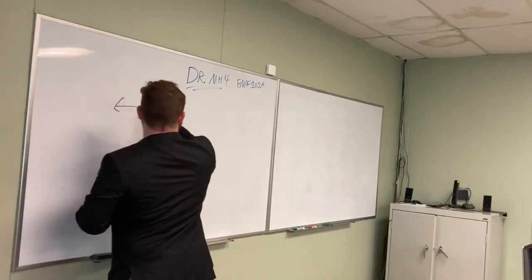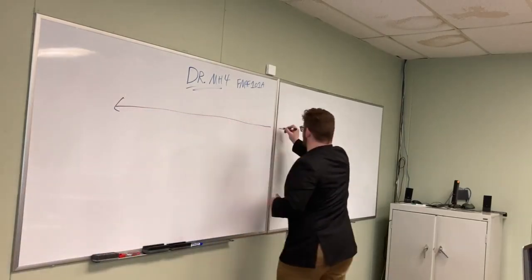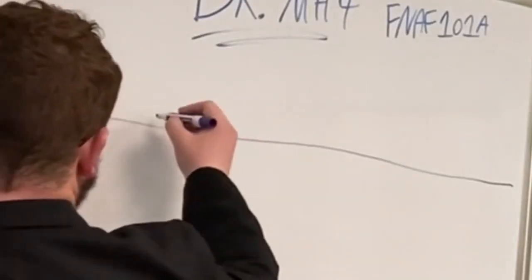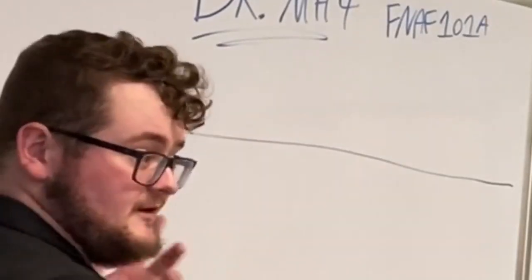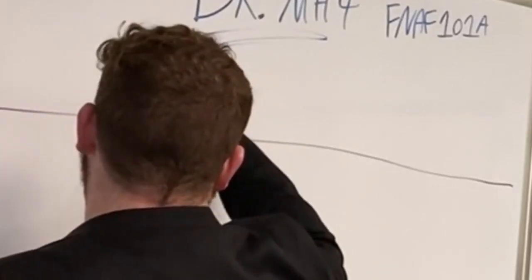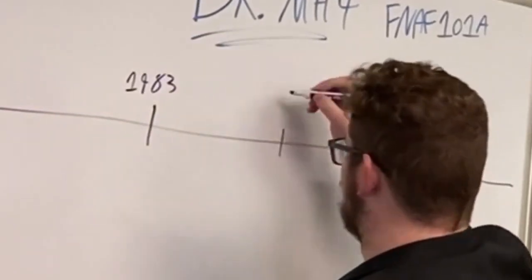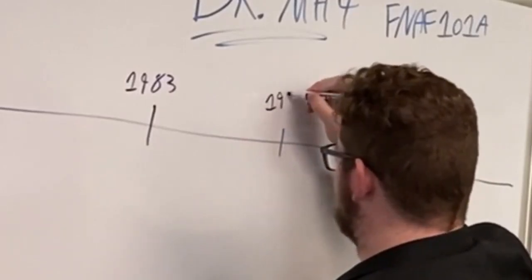We're going to make our timeline, and we're going to make it a little long just in case. Let's go ahead and put this as an important date that we will meet later: 1983. And then this important date we will meet later: 1987.